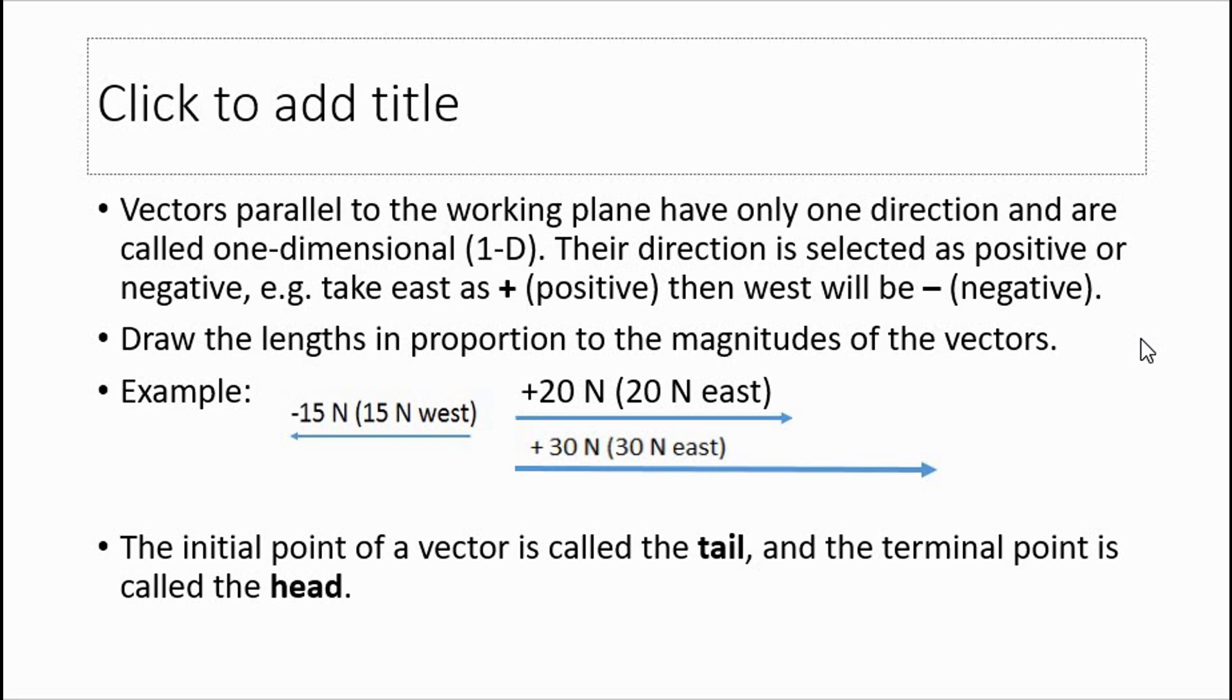When we depict these vectors, we draw the lengths in proportion to the magnitudes of the vector. So we drew 15 newtons west kind of small and 20 newtons east a little bit bigger, and 30 newtons east is a little bit bigger. The initial point of a vector is called the tail, and the terminal point is called the head. So over here where the arrow is, this would be the head, and at the back here, this would be called the tail of the vector.